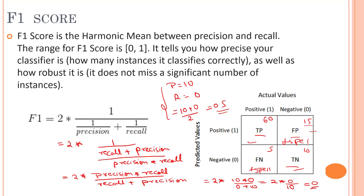In the cancer prediction scenario, the Type 2 error — false negative — is the main concern. If our model tells a person they do not have cancer, but they actually do, that is extremely harmful. So false negatives must be minimized in such scenarios. In most data science interviews, you will be given a situation and asked which error type you should focus on reducing.